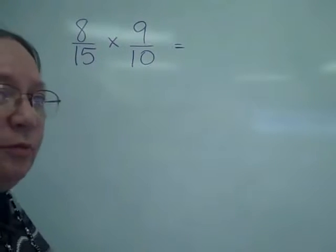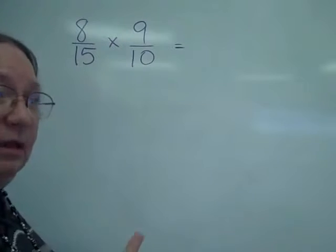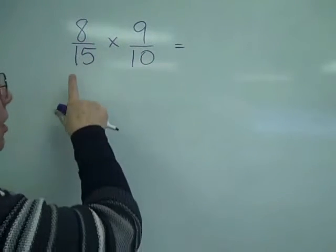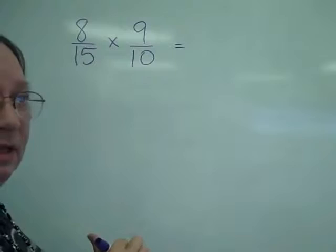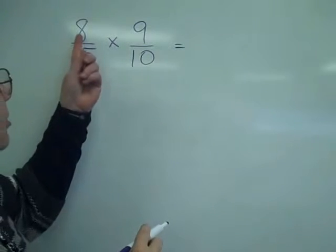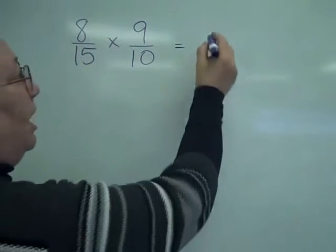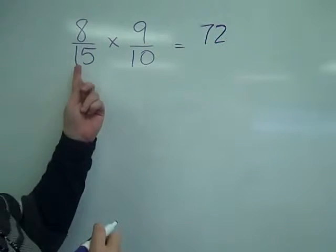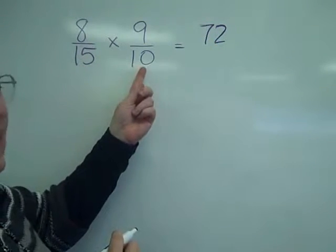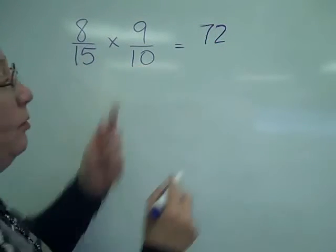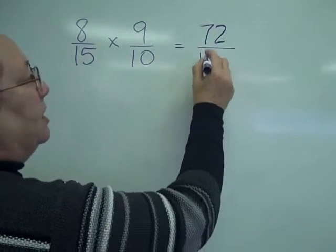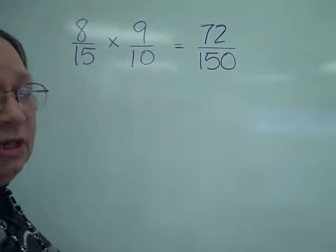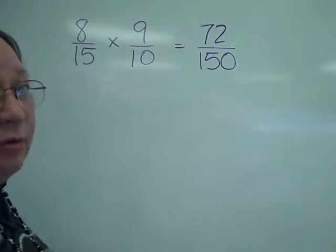The rule for multiplying fractions says: multiply the numerators, multiply the denominators. So multiplying the numerators, 8 times 9 would give me 72. Then 15 times 10 would be multiplying the denominators, and then I have a really large fraction that I have to reduce.